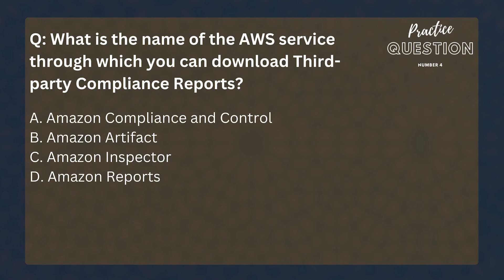What is the name of the AWS service through which you can download third-party compliance reports? Amazon Compliance and Control, Amazon Artifact, Amazon Inspector, Amazon Reports. This is a question that will most probably show up on your exam. Do not forget about Artifact Service — you can use it to download compliance reports and also sign agreements with AWS.